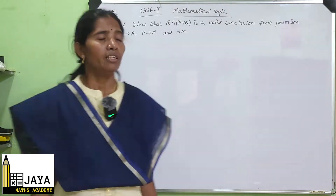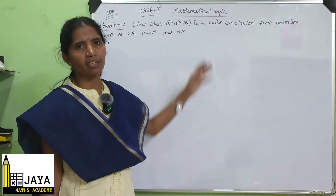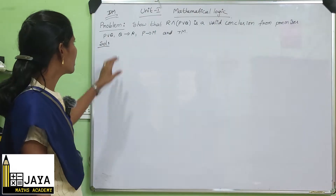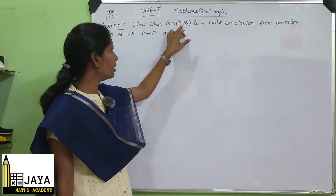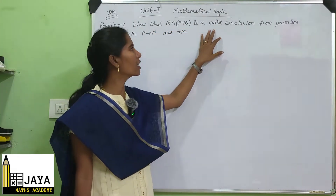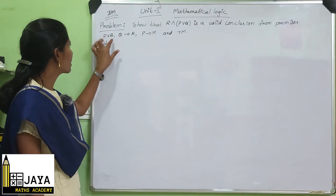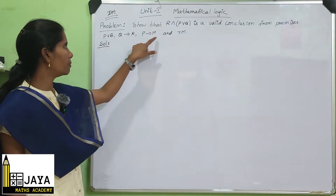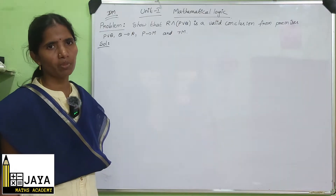Welcome to Jaya Maths. In discrete mathematics, mathematical logic, today our topic is: show that R and P∨Q is a valid conclusion from the premises P∨Q, Q implies R, P implies M, and negation M.